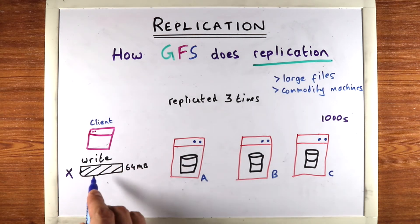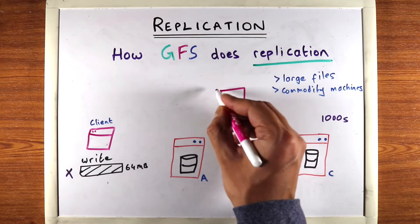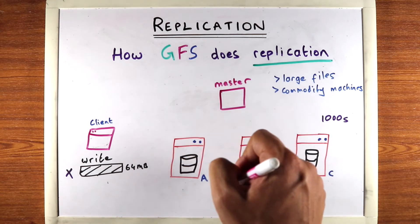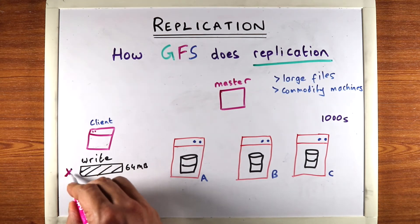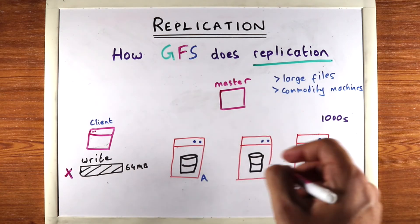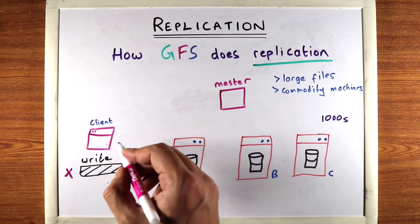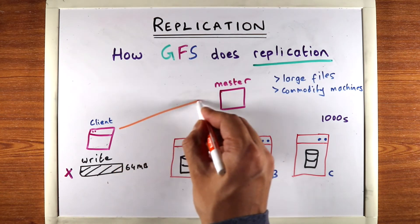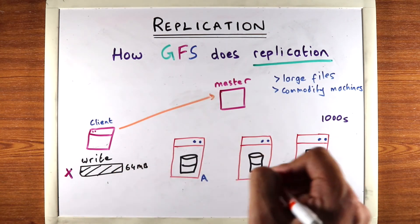So you have a client that's writing this block into these three machines. Now there's another machine here, which is the master, which stores which data should go in which machine. So block X is here, master knows which machines block X should go to. So the first thing the client does is that it contacts the master asking it which machines it should write to.